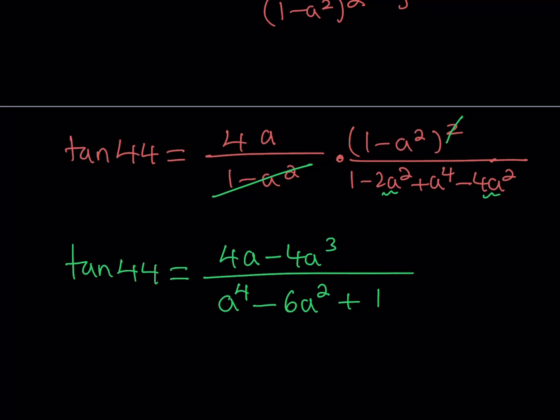Remember, we started with tangent 11 and got to tangent 44. But why did we get to 44? We need tangent 1. Here's the trick: 44 plus 1 is equal to 45.